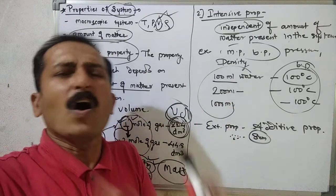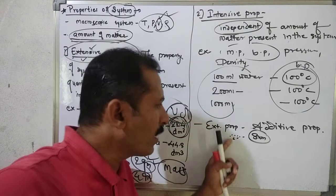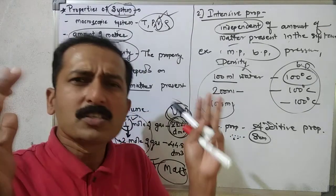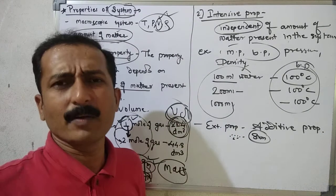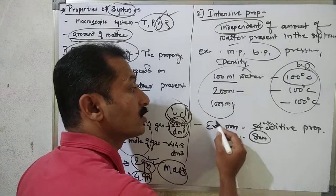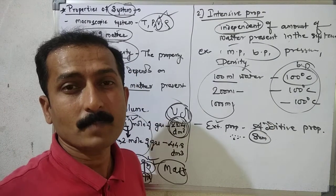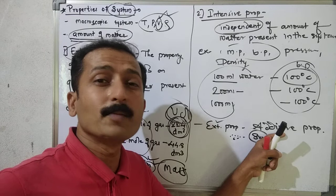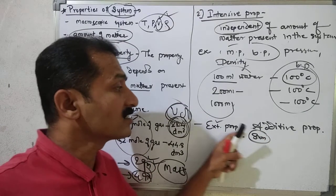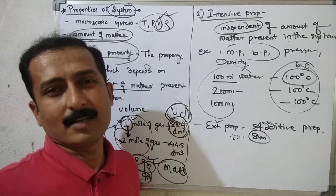We have to add all the particles' property values. To describe the extensive property of a system, we need to do the addition — the summation of each particle's property. For example, the volume of a gas is determined by summing contributions of each gas molecule. That is why extensive property is called additive property.